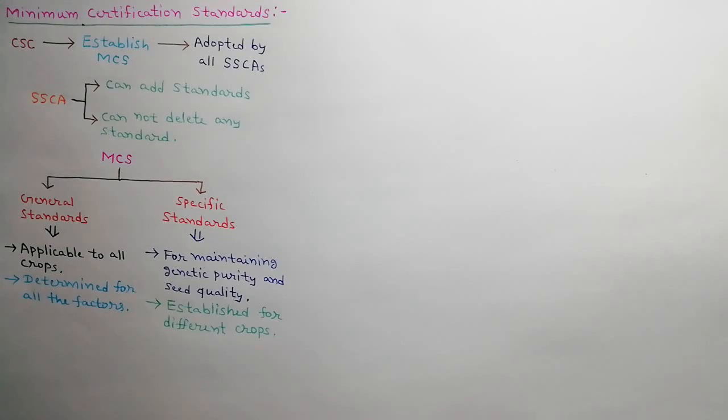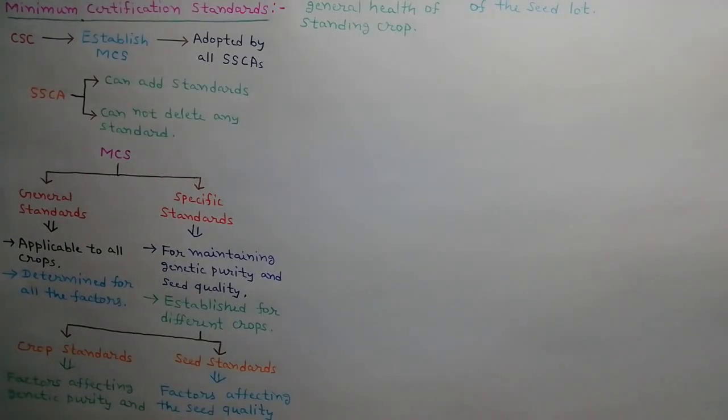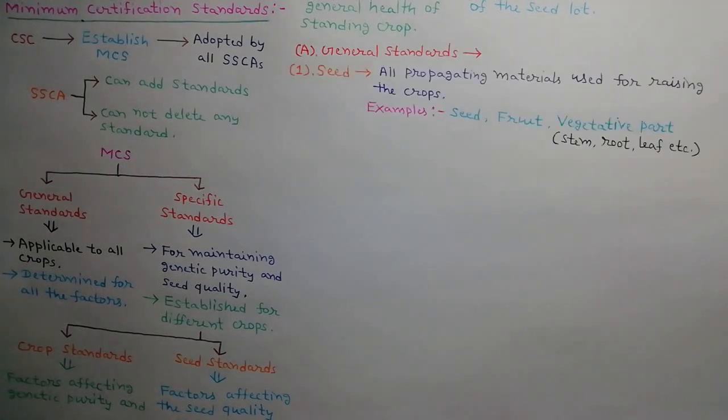Specific standards for maintaining genetic purity and quality of different kinds of seeds have been established for different crops. Specific standards are further divided into crop standards and seed standards. Crop standards consider factors affecting genetic purity and general health of the standing crop. Seed standards consider factors affecting seed quality of the seed lot. There are 18 general standards for seed certification. The word seed used in general standards includes all propagating materials used for raising crops, which may be seed, fruit, or any vegetative part of the plant such as stem, root, or leaf.